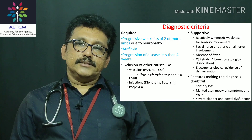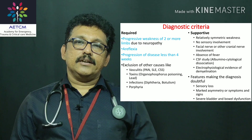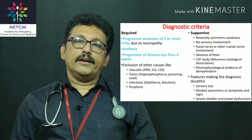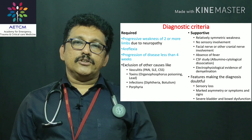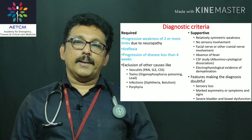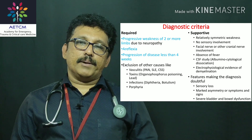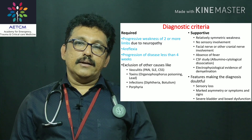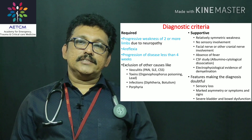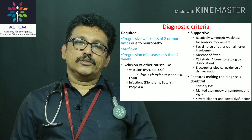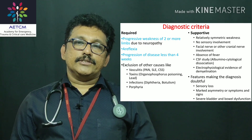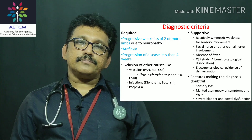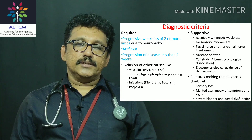Supportive evidence for GBS includes symmetric weakness, no sensory involvement, possible facial or other cranial nerve involvement, and absence of fever at presentation — though fever may have occurred one week prior to onset. CSF study shows albuminocytological dissociation, and electrophysiological study shows evidence of demyelination.